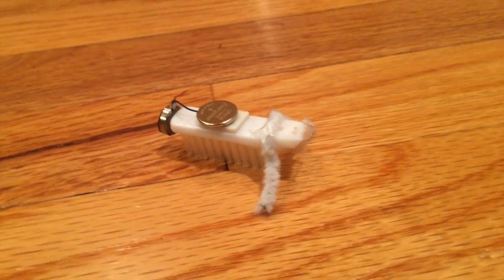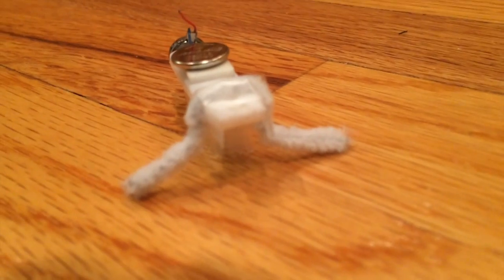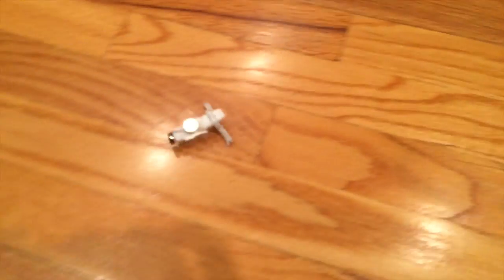If your brush bot doesn't want to stay upright, put a piece of a pipe cleaner on the back to stabilize it, then watch it go.